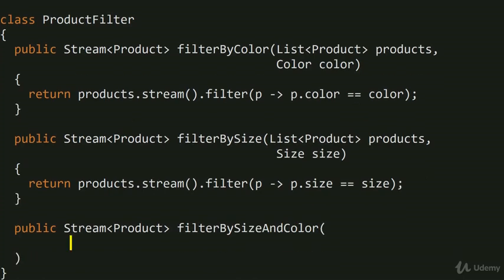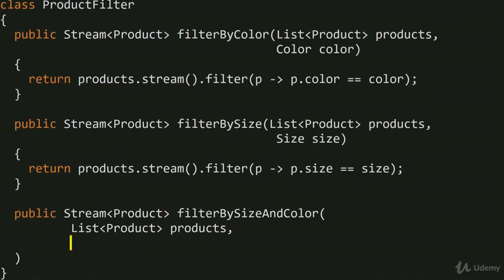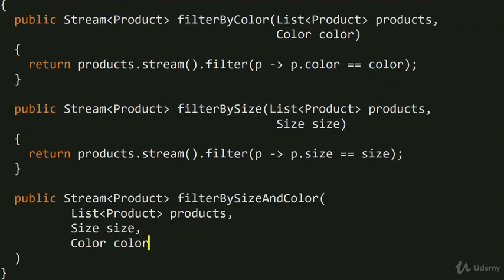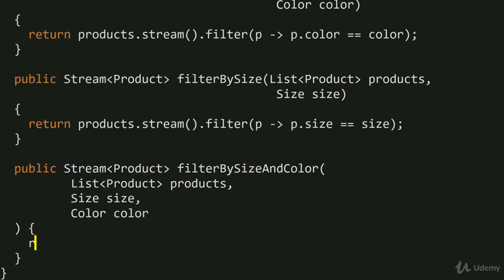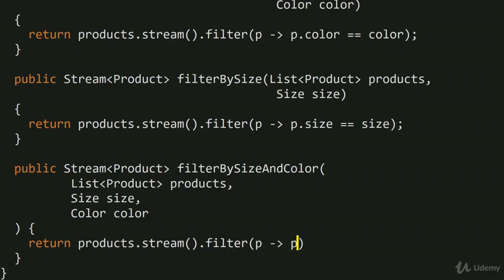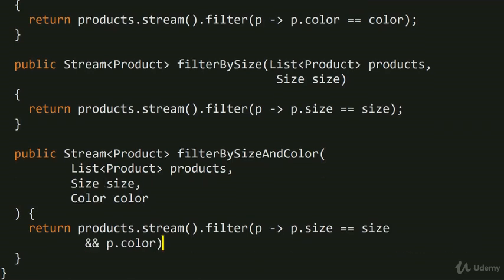The implementation is fairly obvious: we take products.stream() and filter, checking that p.size equals size and p.color equals color. The problem is this is okay for two criteria, but if you had three criteria — say color, size, and price — you'd end up with seven methods if you wanted every intersection. That's something you really don't want to do.